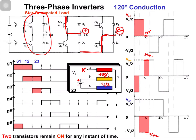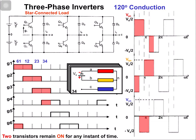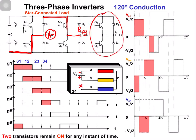Moving to the next switching state 3 and 4: because of switch 3, phase B is connected with the positive terminal. Because of switch 4, phase A is connected with the negative terminal. Phase C is in the floating state — not connected anywhere.